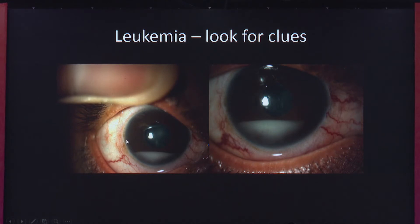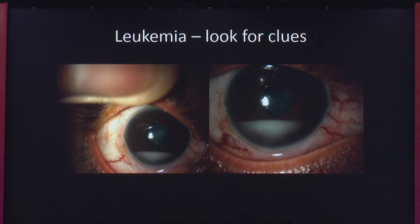Yes — we can see there is hardly any circumcorneal or conjunctival congestion. If you look at the hypopyon itself, it has a convex margin, appears to be composed of larger cells, and doesn't shift easily. When you see a hypopyon composed of larger cells that doesn't shift easily and is probably convex, with hardly any inflammatory signs, you should think there is something other than an infective cause.